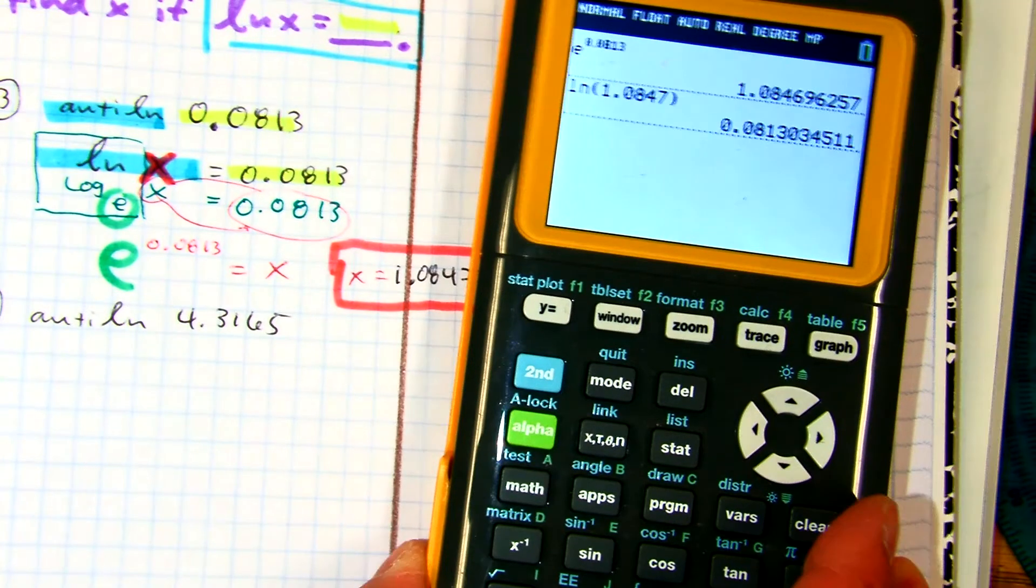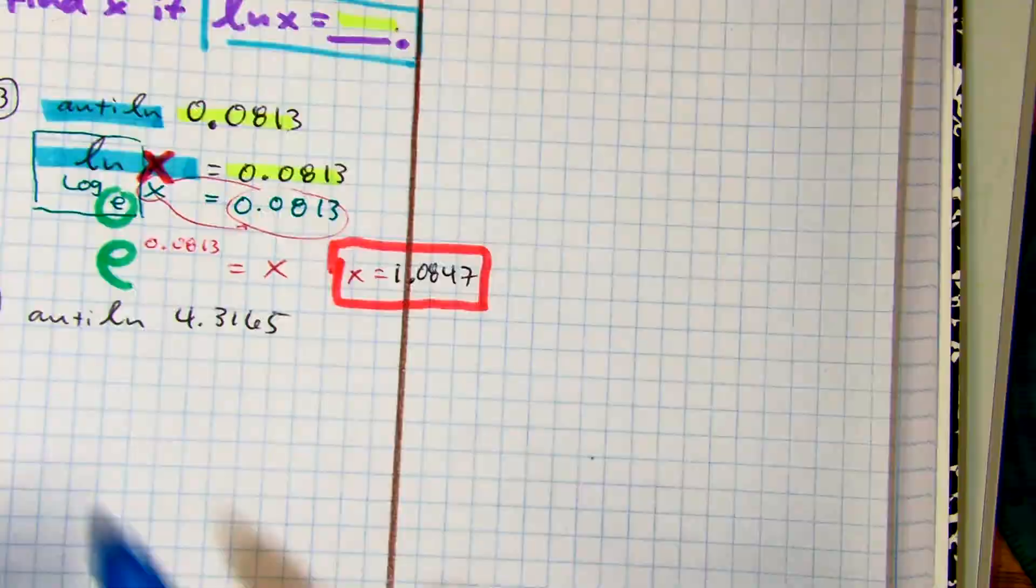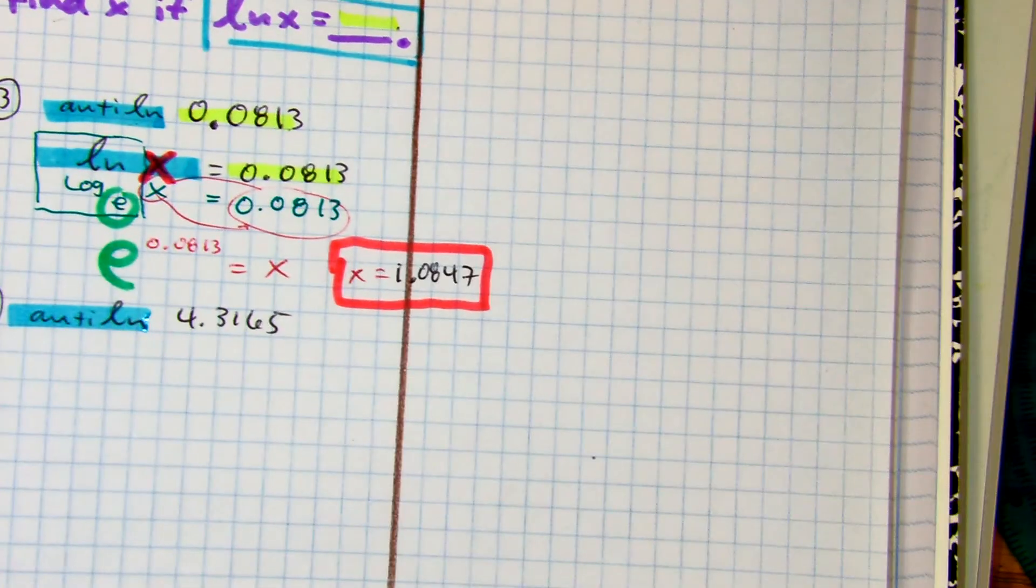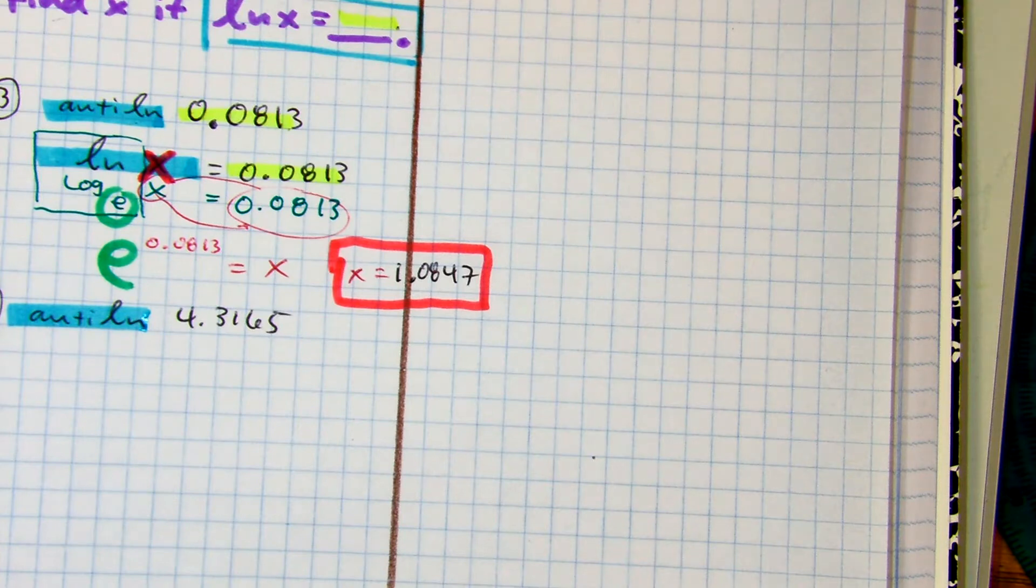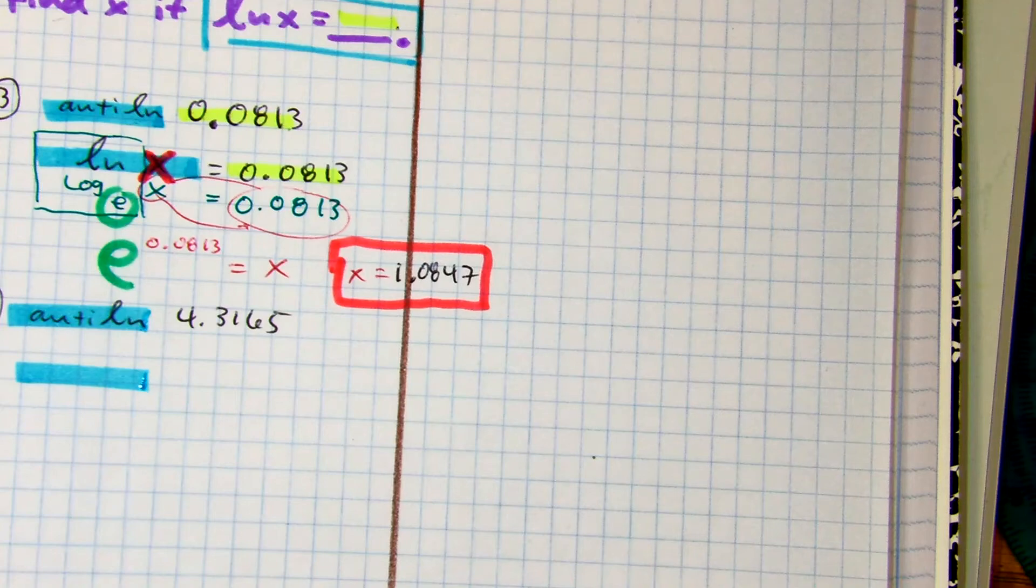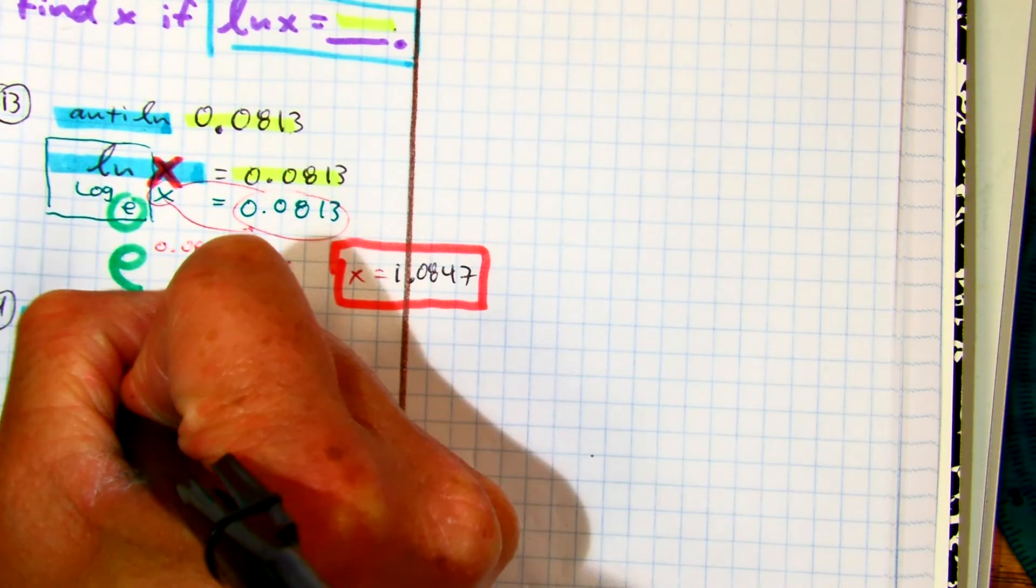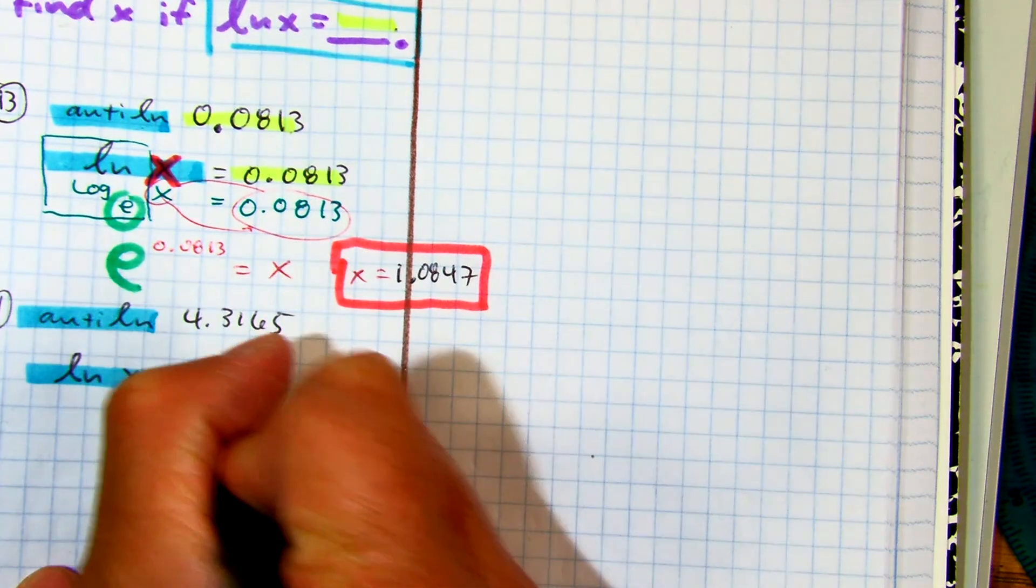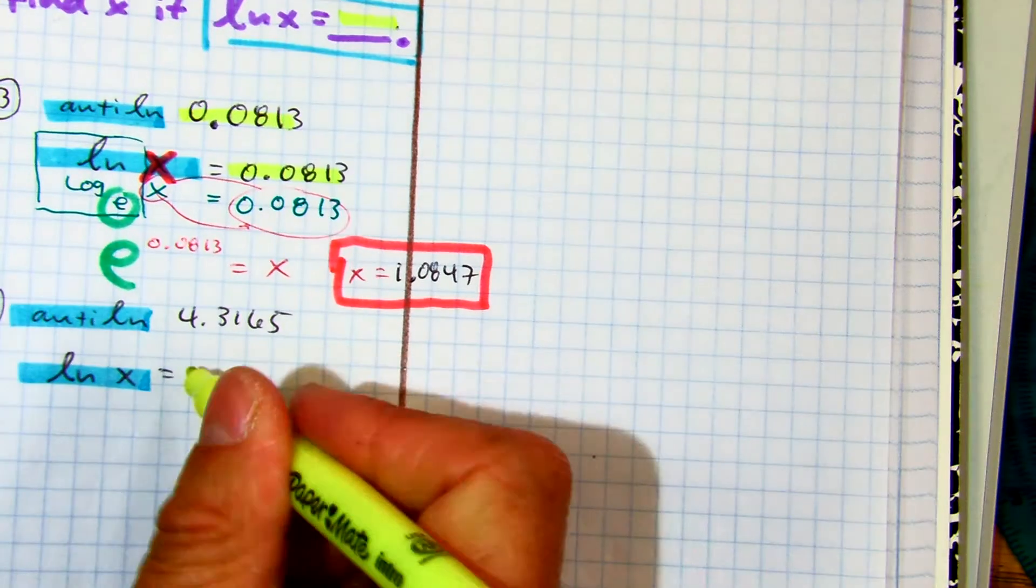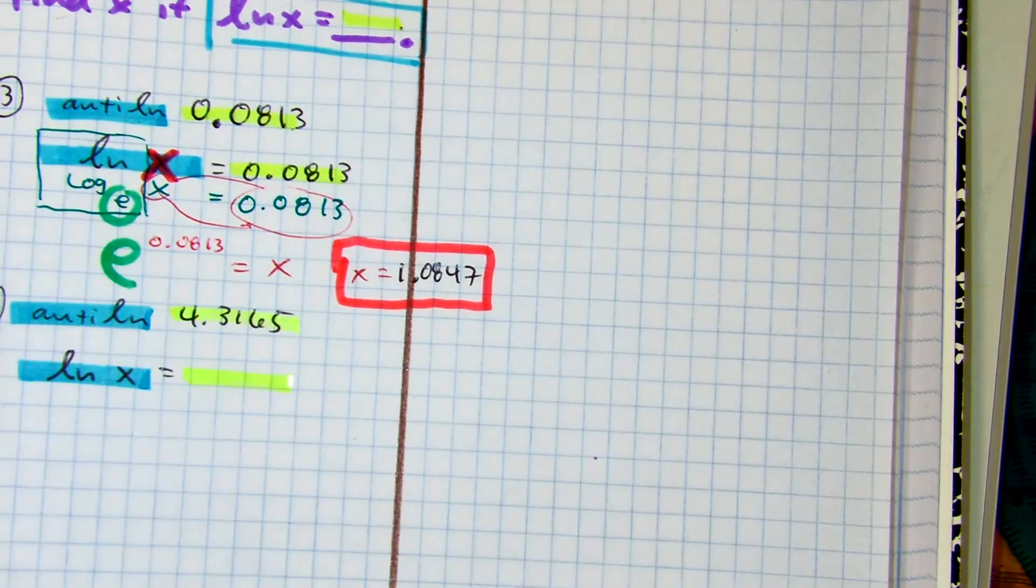Let's try another example. Partner A tell partner B, what do you write when you see the word anti-log? Class, what are you going to write there? And class, what number do we write here? Whatever number they give you, 4.3165.